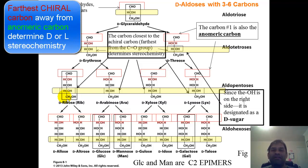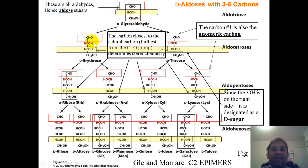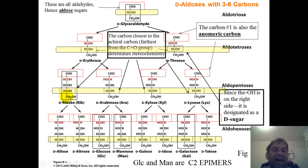Stereochemistry — whether a sugar is D or L — is determined by the chiral carbon farthest away from the anomeric carbon. We know that the anomeric carbon for all aldoses is carbon number one. Looking at ribose: carbon one is anomeric, carbon two is chiral, carbon three is chiral, carbon four is chiral, carbon five is not chiral. So what determines stereochemistry is the OH attached to carbon number four for ribose, arabinose, xylose, and lyxose.